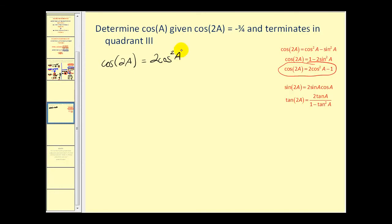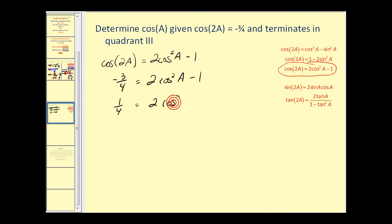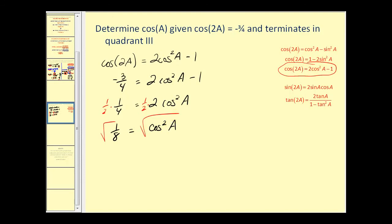The cosine of two A is negative three fourths, so we use the identity cosine two A equals two cosine squared A minus one. Adding one to both sides: negative three fourths plus one gives one fourth, so one fourth equals two cosine squared A. Dividing by two gives one eighth equals cosine squared A. Taking the square root of both sides, cosine A equals plus or minus square root of one eighth, which simplifies to plus or minus one over two square root two. We need to determine the sign.